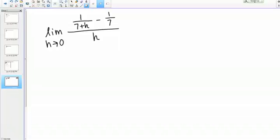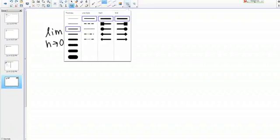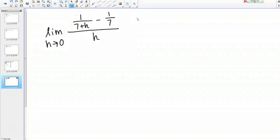Let's take a look at this limit. The limit as H goes to 0 of 1 over 7 plus H minus 1 seventh all over H. Let's try and think ahead a little bit and picture what's going to happen if we work through this limit and get an answer.